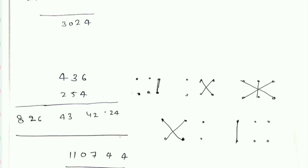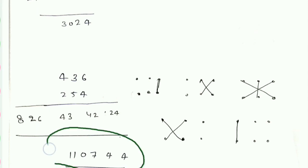अब इन्हें लिखते हैं: 24 का तो 4 आएगा, 2 आगे add होगा — 44, 4 लिख लिए, 4 आगे add होगा। 43 और 4 = 47, तो 7 आया, 4 आगे add होगा। 26 और 4 = 30, 0 आया, 3 आगे add होगा। 8 और 3 = 11 — तो इसका answer हो गया: 1, 1, 0, 7, 4।